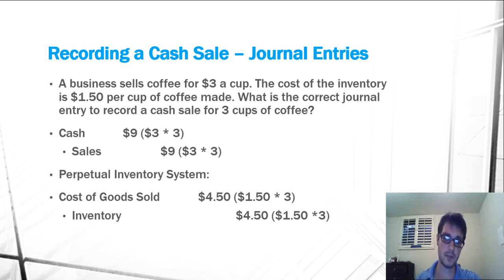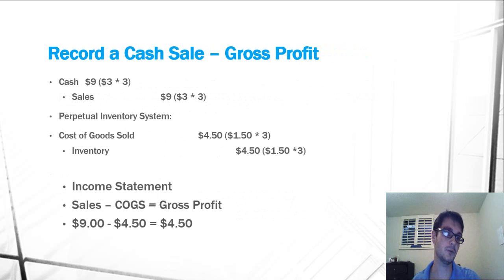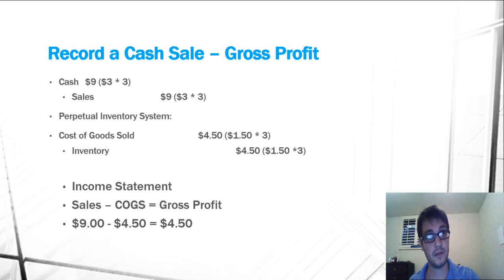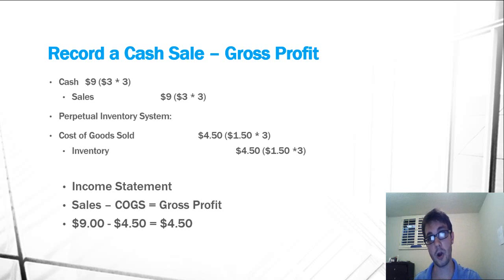So with this information, we can actually calculate something pretty interesting — the gross profit of the sale. The gross profit of a sale is equal to the sale minus its cost of goods sold. So we take our $9 sale minus our cost of goods sold of $4.50 to calculate that we have a gross profit of $4.50. That means we are making $4.50 off of this sale.